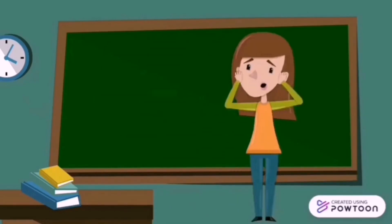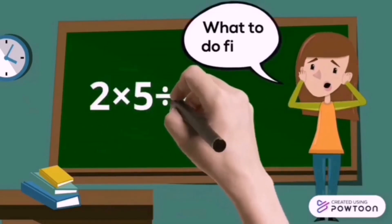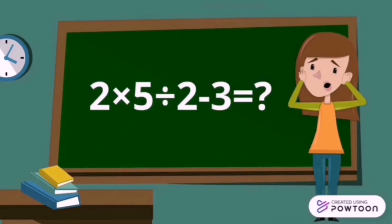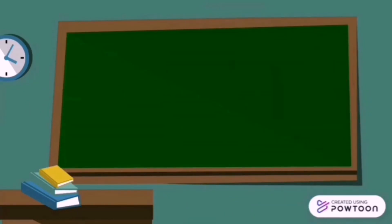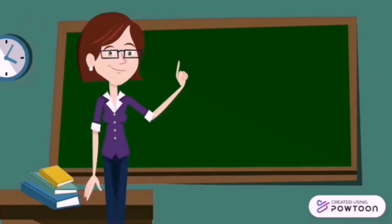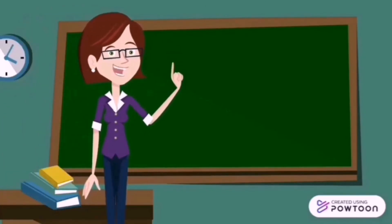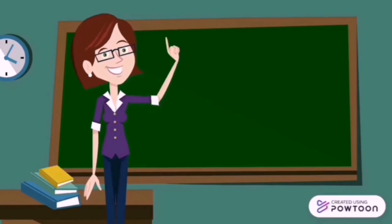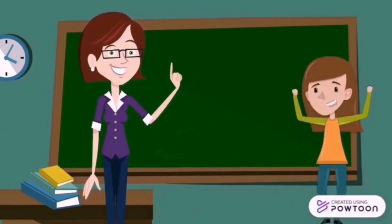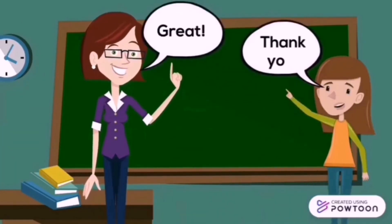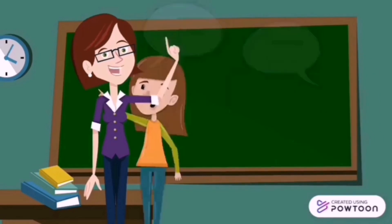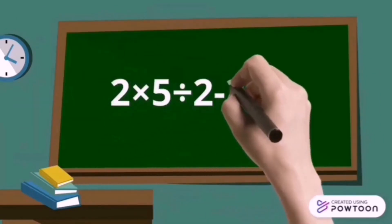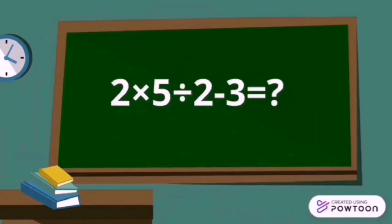Now, back to Joy's math problem. We will try to solve it. Now we are going to solve Joy's math problem. Are you with me? Great! 2 times 5 divided by 2 minus 3 equals blank.